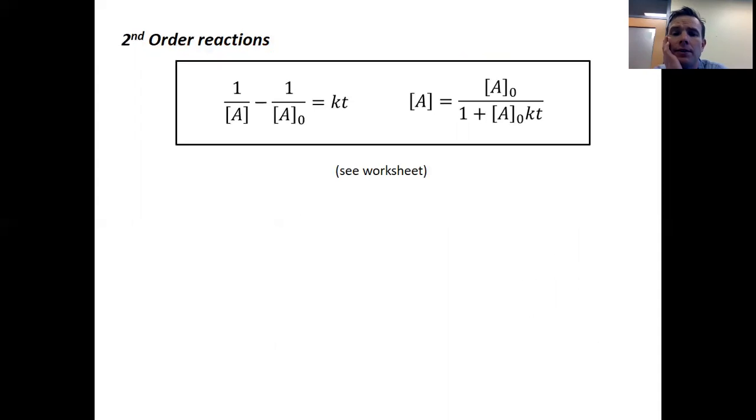All right, that was first-order reactions. Let's talk about second-order reactions. Again, I'm not going to do this for you here. I've asked you to do it on the worksheet, but you can see the final result. If you're a note-taking person, write this into your notes. Rather than an exponential expression, I now get a 1 over A expression equals kt. Or if I solve this for A, you get something that looks like this.